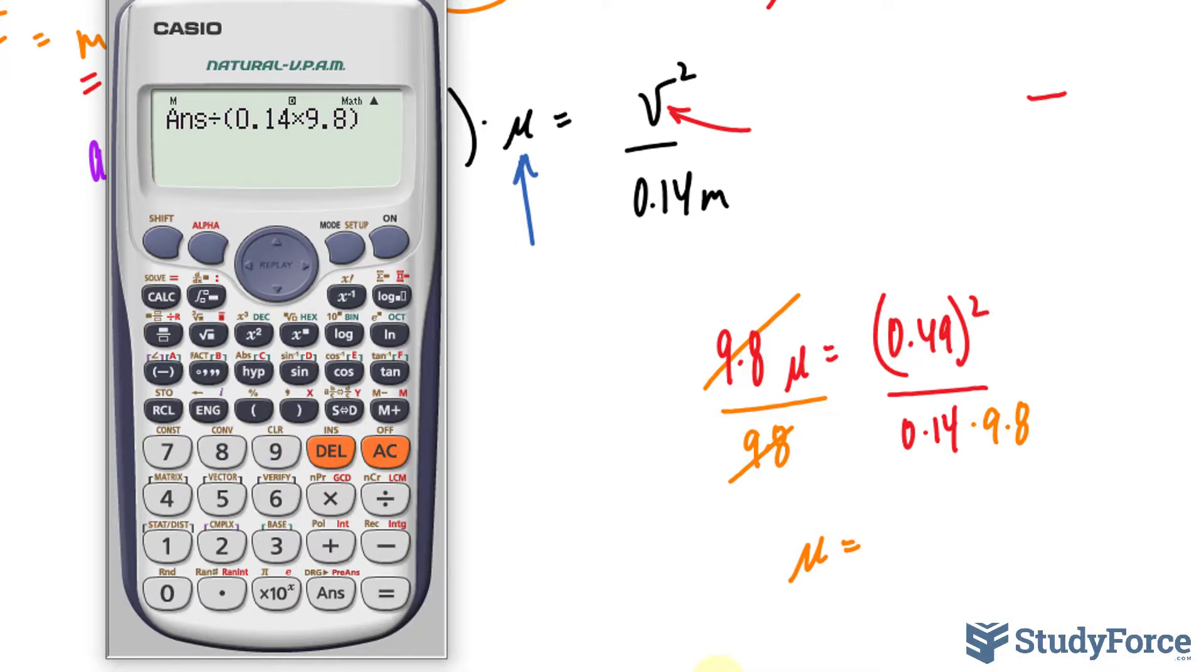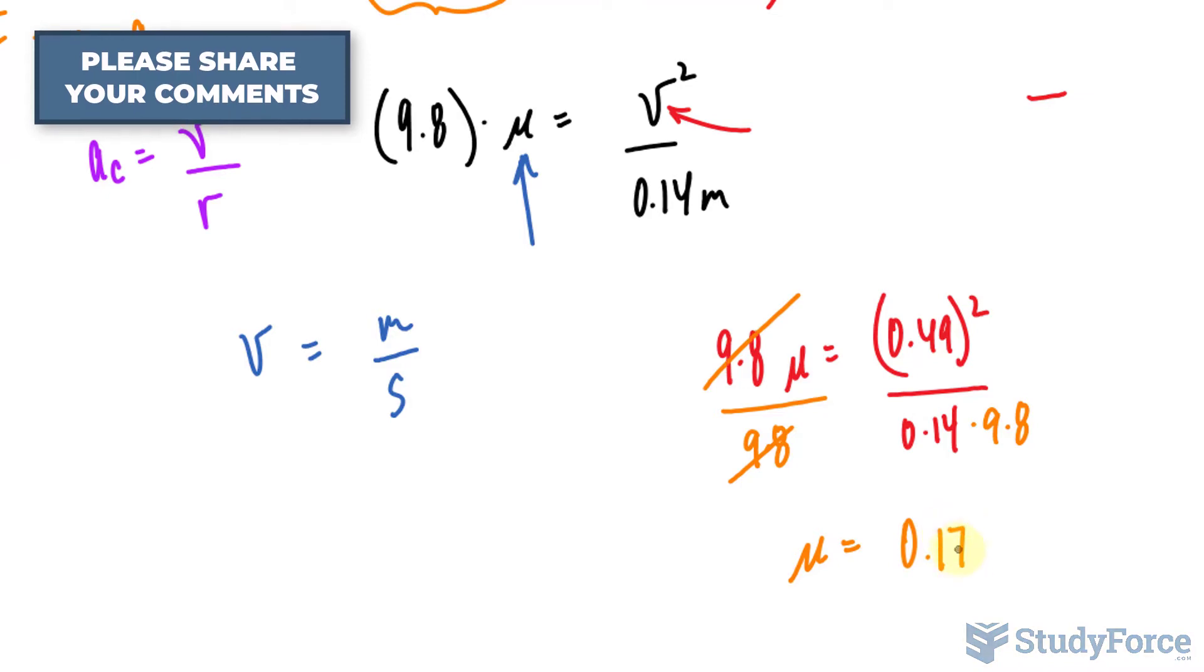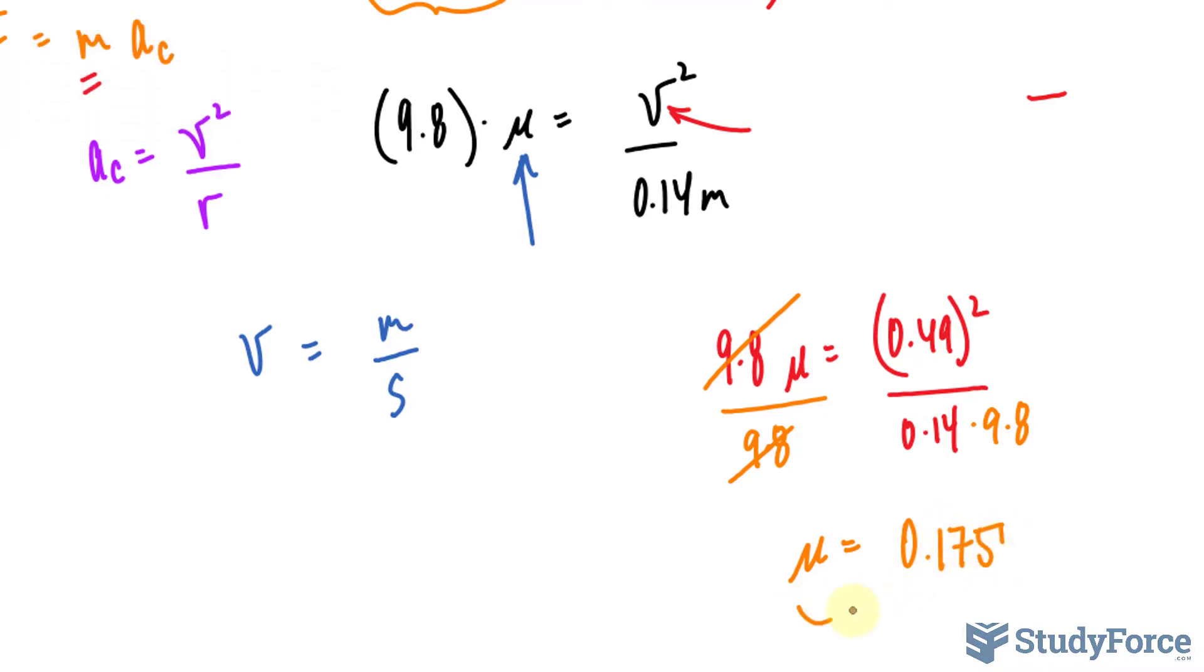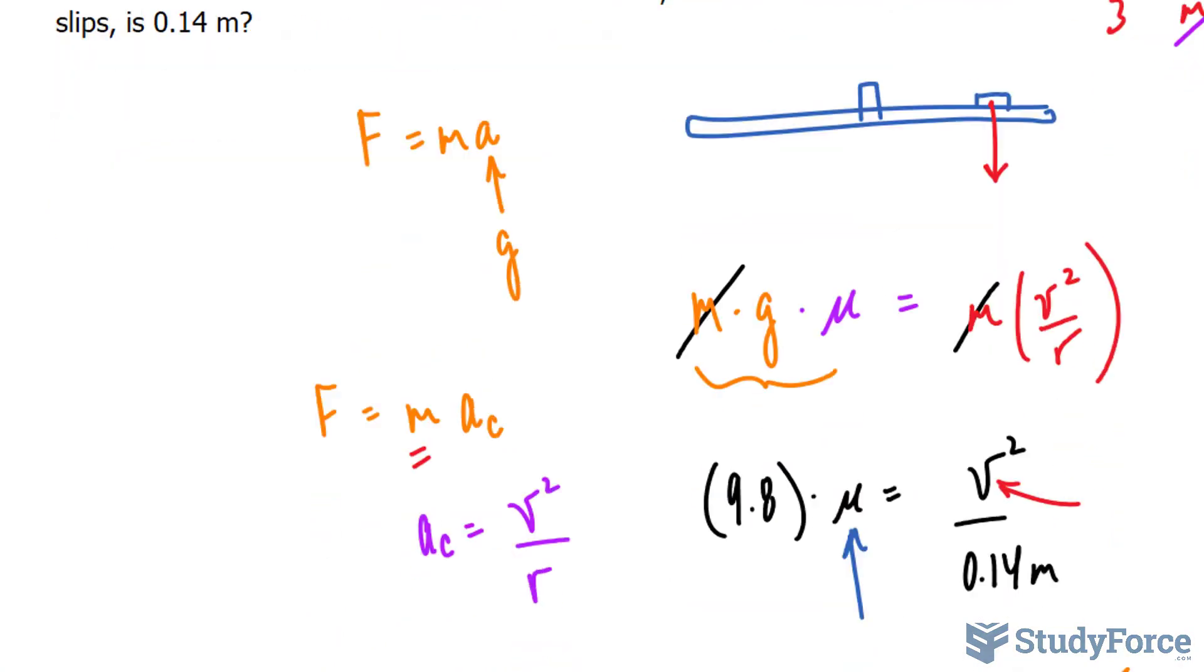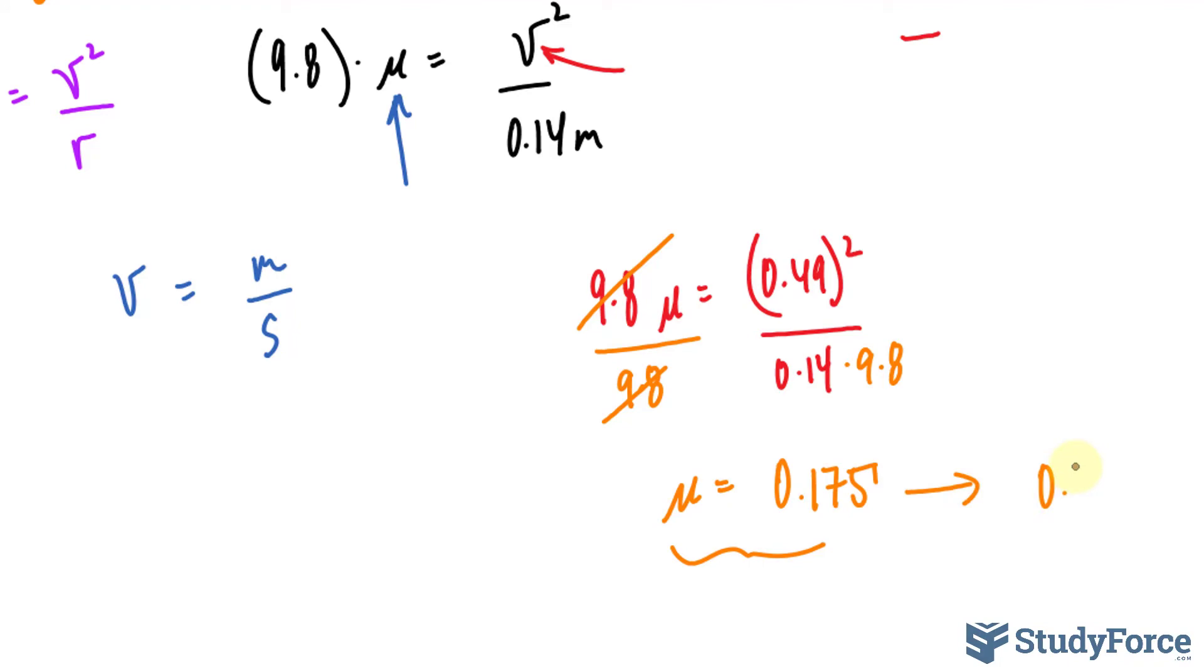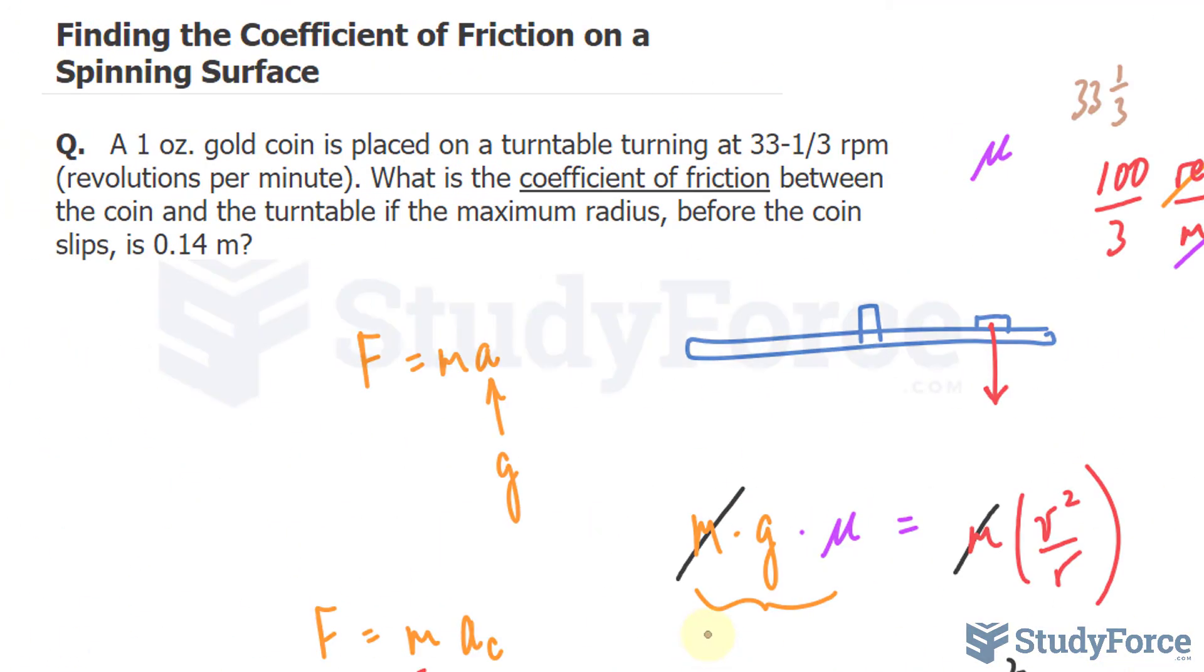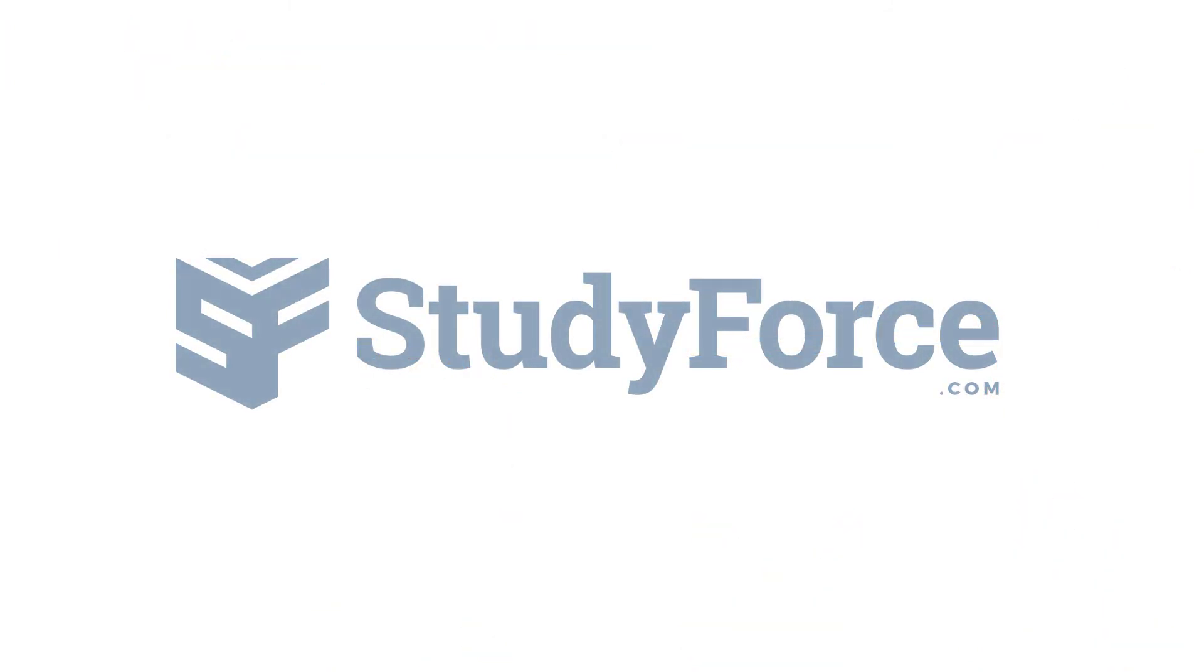Now, you saw in the calculation I wrote down 0.49. I rounded, I used the rounded number to proceed with the calculation. But normally, you would just keep the unrounded version until the very end. So just letting you know that. And we get a coefficient of friction that is 0.175. And this is unitless. Keep in mind that 0.175 to the correct number of significant figures should be 0.18. So I forgot to mention that. But now you know how to find the coefficient of friction on a spinning surface.